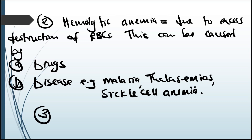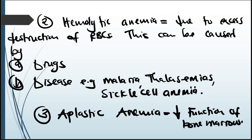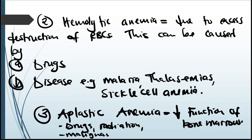The third type of anemia is aplastic anemia, which results from a reduced function of the bone marrow — the bone marrow is not producing enough red blood cells. The causes of aplastic anemia include excess use of drugs, excess exposure to radiation, and malignancy of the bone marrow. Those are the three types of anemia.